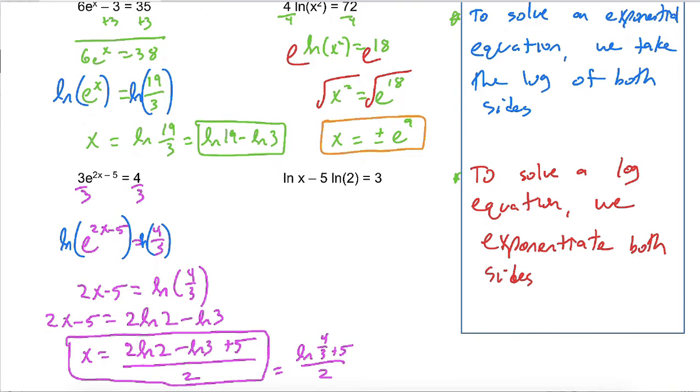And then for the log equation, remember just like with all the other logs we've done, exponentiating both sides is great, but first you've got to condense the logs. So that would be the ln of x over 2 to the 5th power is 32 equals 3.